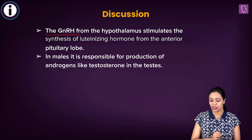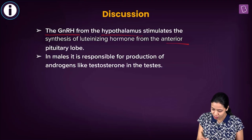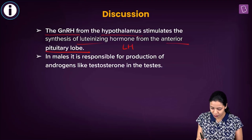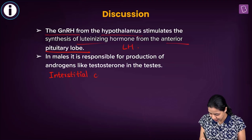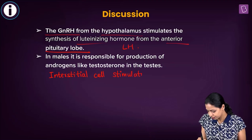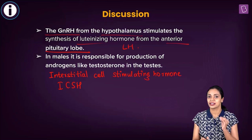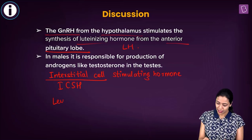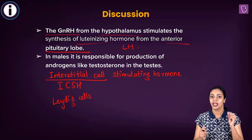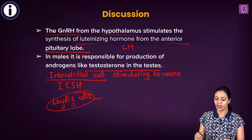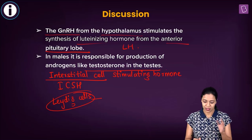GnRH produced by the hypothalamus stimulates the anterior lobe of the pituitary to produce LH. In males, LH is also known as ICSH — interstitial cell stimulating hormone. Within the testes there are interstitial cells, also called Leydig cells, which are involved in the production of androgens such as testosterone. When LH is produced in males, it stimulates these cells to produce androgens such as testosterone — hence LH is also called ICSH.